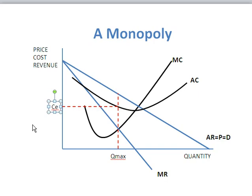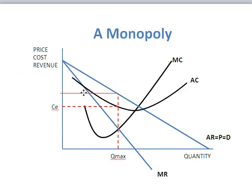You'll notice I've run a dotted line straight through the point where MC is equal to MR, running right up to the demand curve, because that's the price this monopolist is going to receive. So we put that line in there, and that of course is going to be PE.